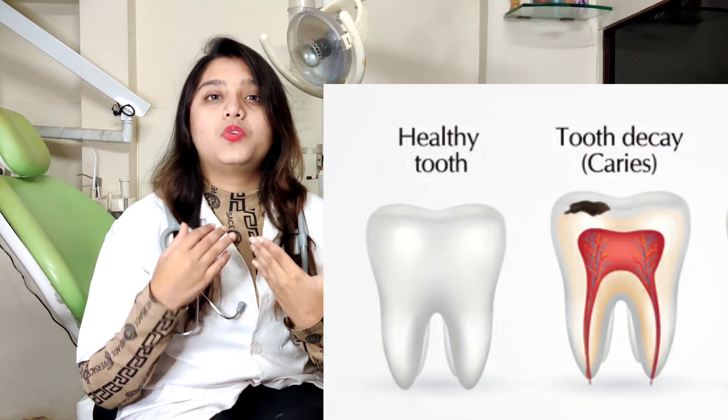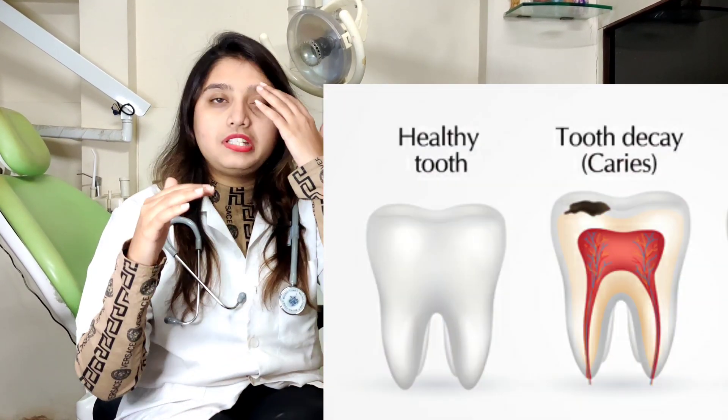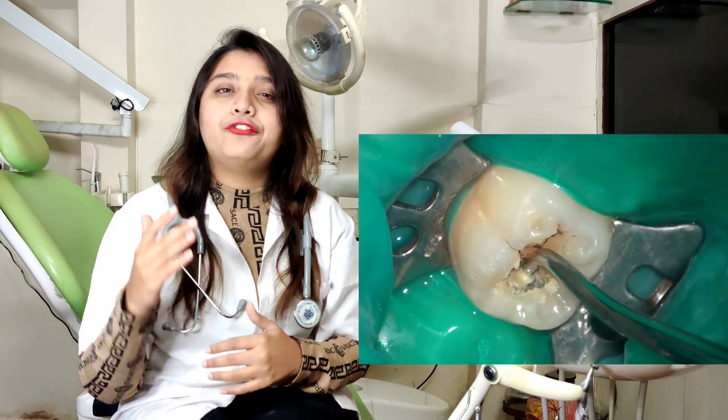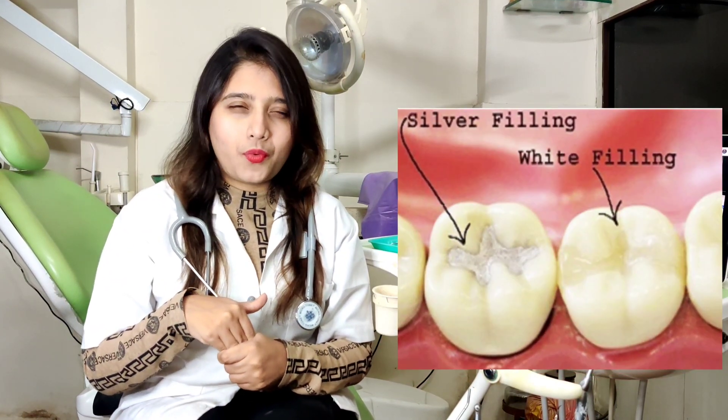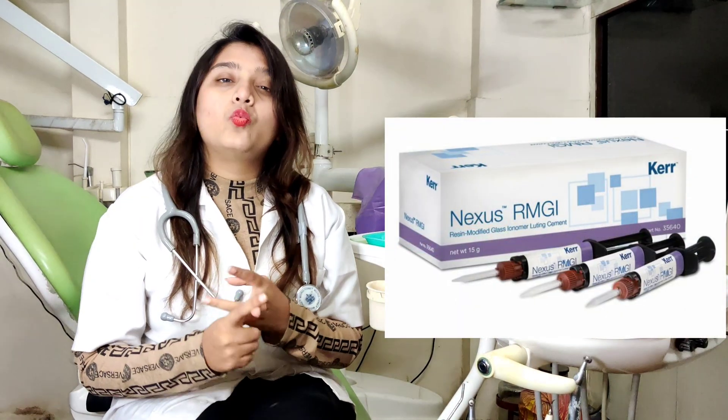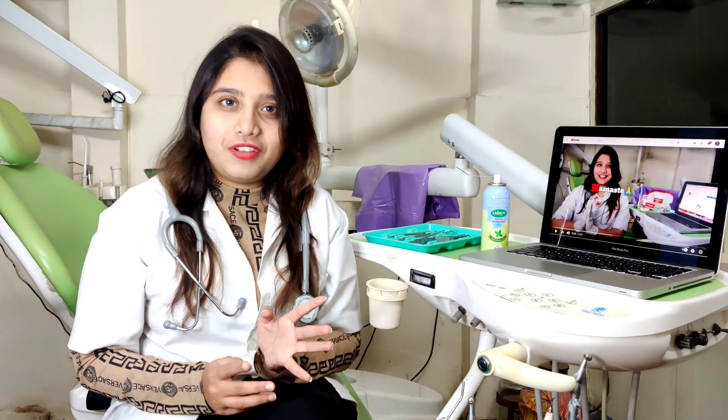The first three stages are basically reversible. If the decay is reaching your enamel or dentine, it can be reversed by just removing the decay and filling a cement there. We have various types of cements available for restoration, like GIC — glass ionomer cement — then we have resins, composite cements, and many more. If your stage of tooth decay is reversible, you can fill a cement and get it treated.